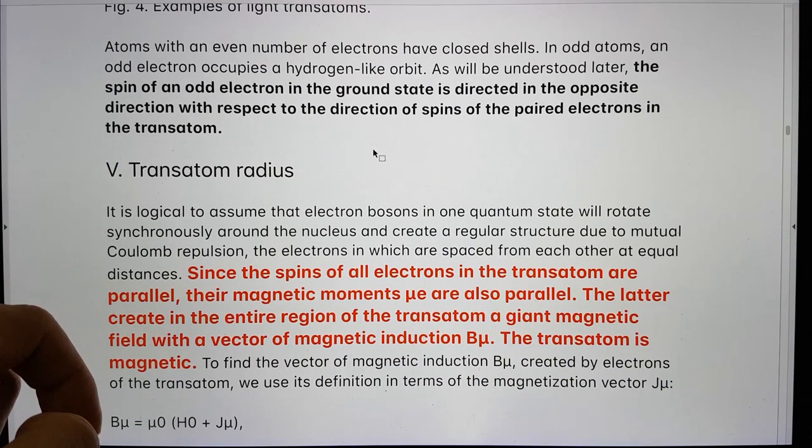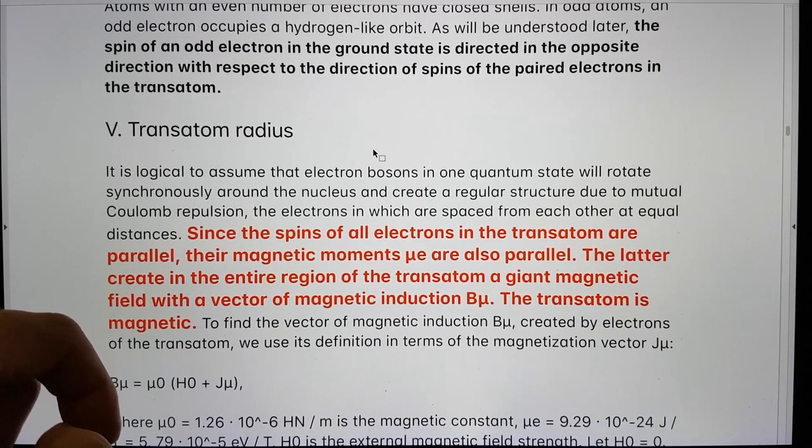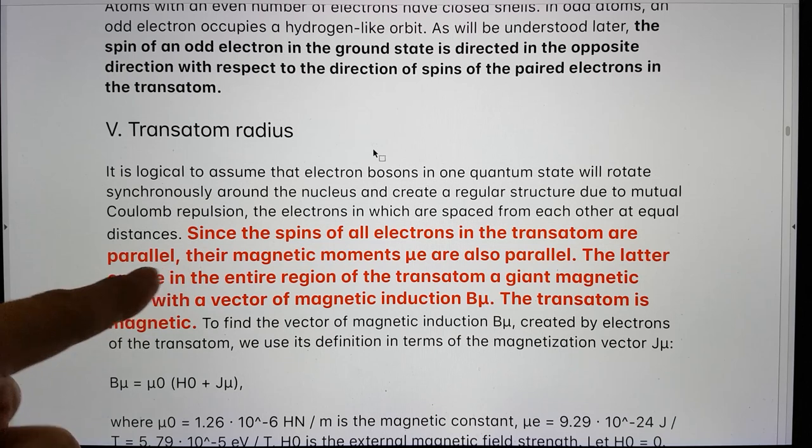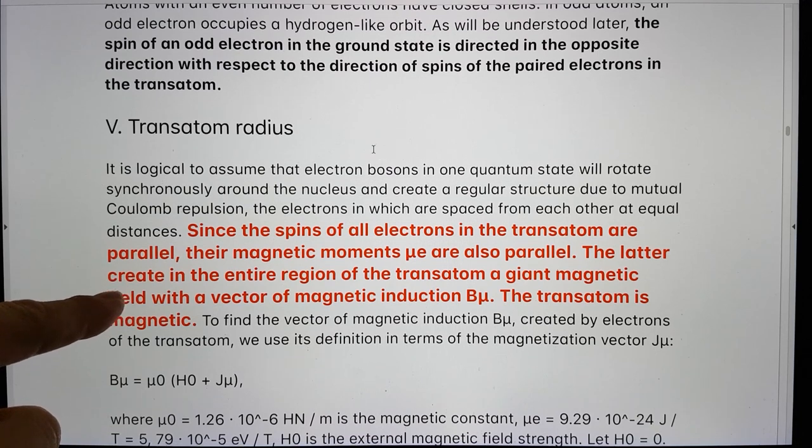Five, transatom radius. Since the spins of all the electrons in the transatom are parallel, their magnetic moments, mu E, are also parallel. The latter create in the entire region of the transatom a giant magnetic field with a vector of magnetic induction, BU. The transatom is magnetic.